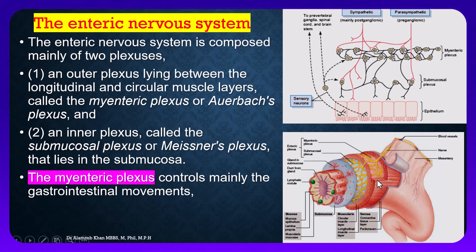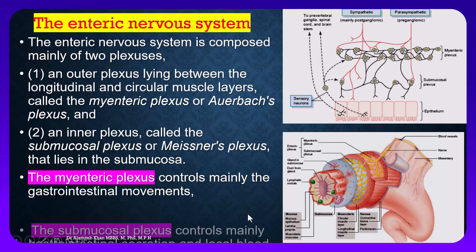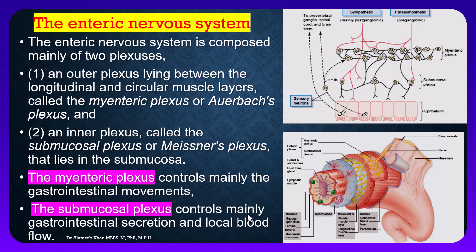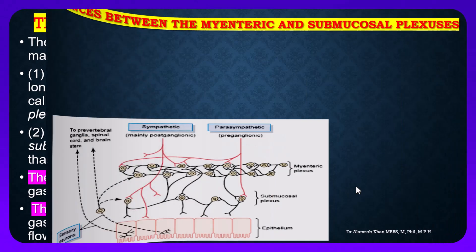The myenteric plexus controls mainly gastrointestinal movement of the muscles, while the submucosal plexus controls mainly gastrointestinal secretions and local blood flow. So 'M' is for movement (myenteric) and 'S' is for secretion (submucosal).